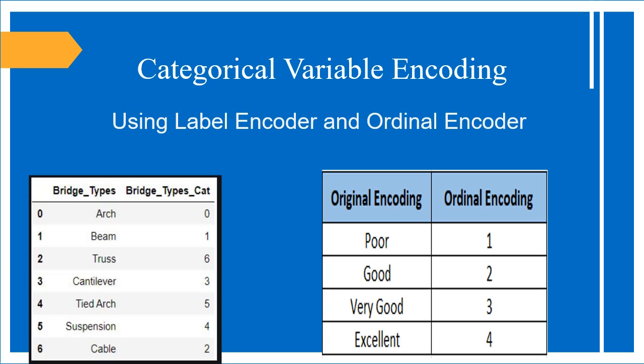Hello everyone, welcome to All About Analytics. In this tutorial we are going to discuss categorical variable encoding using label encoder and ordinal encoder. When we deal with categorical variables, there are two classes: the first one is nominal variables and the second one is ordinal variables.